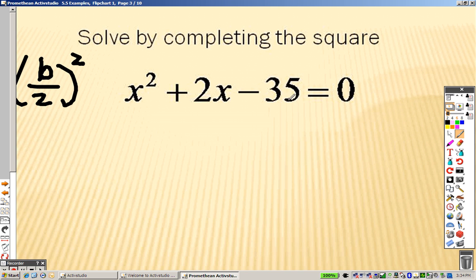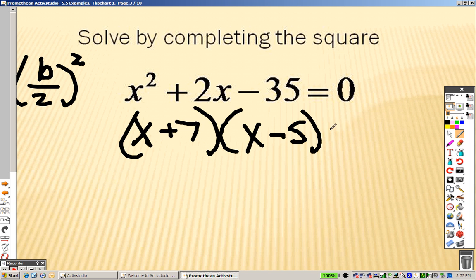Can you think of two numbers that multiply to give you negative 35 that add to give you 2? Well, in this example, you can, right? Positive 7 and a negative 5. That's what you end up with. So when you separate these, what are the answers that you get? x plus 7 equals 0, x minus 5 equals 0.